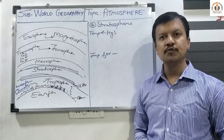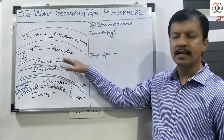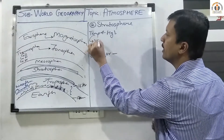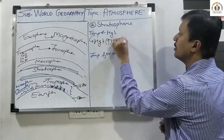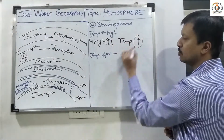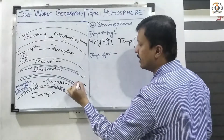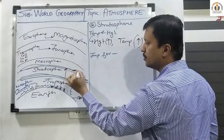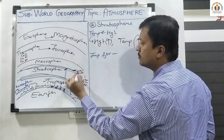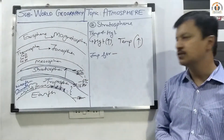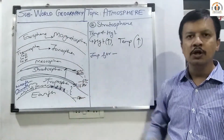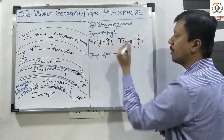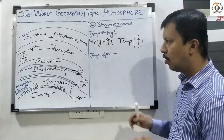The next important layer is the stratosphere, which lies exactly above the troposphere. The first property of stratosphere: as height increases, the temperature also increases. At the edge of the troposphere the temperature is around minus 6 degrees centigrade, and as we reach the top of the stratosphere the temperature becomes 0 degrees centigrade. So as height increases, temperature also increases.